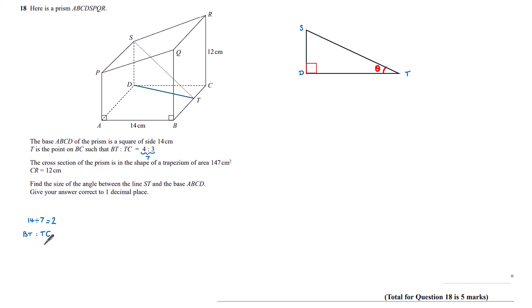Splitting in the ratio BT to TC being 4 to 3, BT is 4 times 2, TC is 3 times 2, which means I've got 8 centimeters to 6 centimeters, which I can now label on my diagram. Now let's look at the second piece of information.